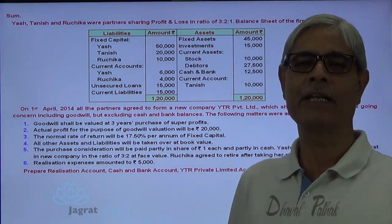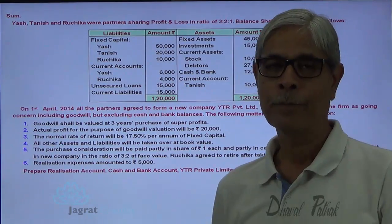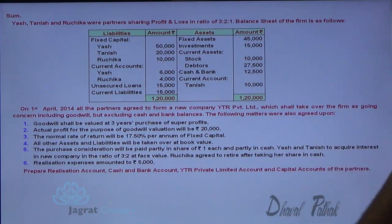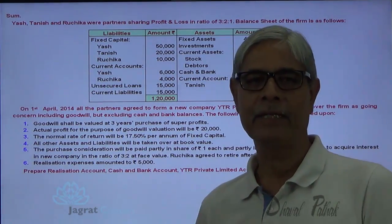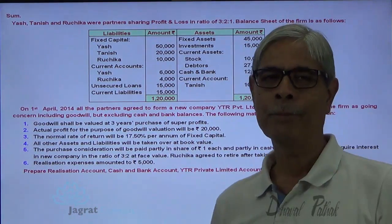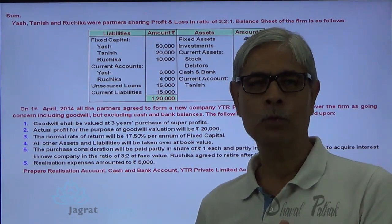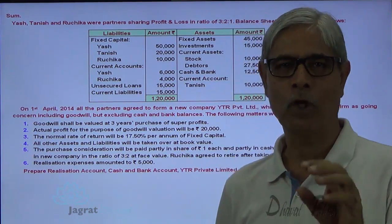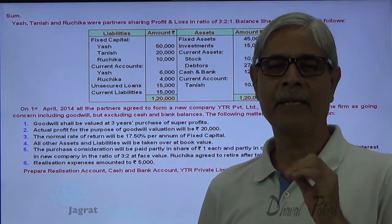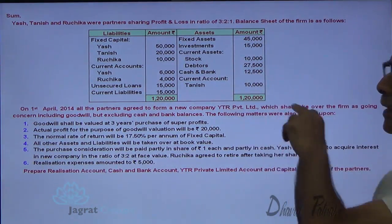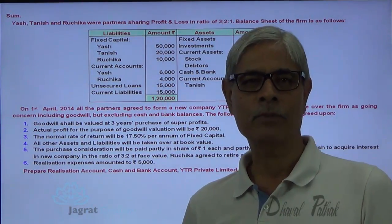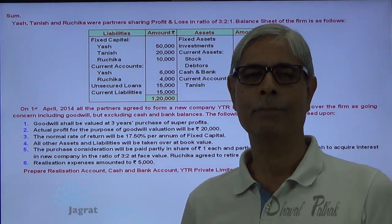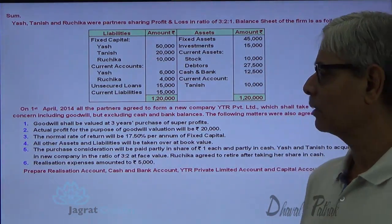Shares are going to be distributed in the ratio of 3 to 2 between Yash and Tanish. Ruchika agreed to retire after taking her share in cash. So the share of Ruchika is to be paid in cash. The cash received from the company will be equal to the cash required for making payment to Ruchika. After making payment to Ruchika in cash, the remaining consideration from YTR Limited will be received in the form of shares, distributed between Yash and Tanish in the ratio of 3 to 2.